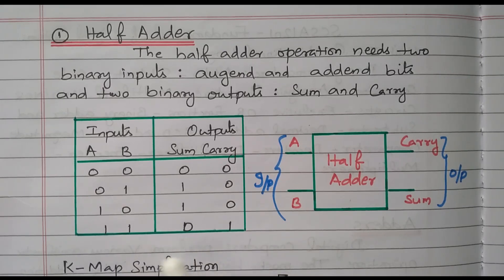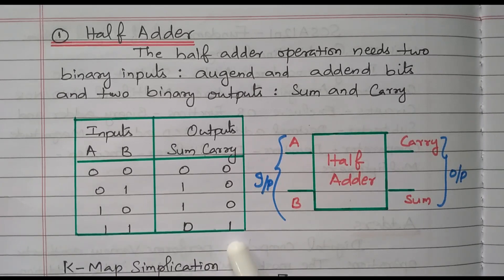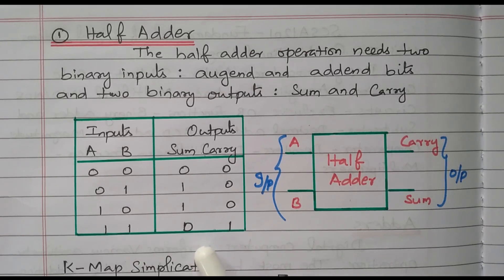So practically when adding two digits, we have one more carry, so adding three digits is practically possible. That is done by the full adder — the full adder will add three digits, that is two inputs and carry. The full adder is practically implemented, but the half adder is not practically implemented. However, using the half adder we can construct the full adder, so that we are using the half adder.